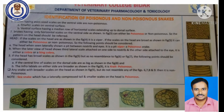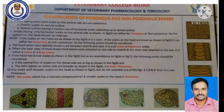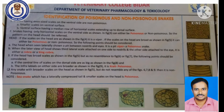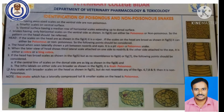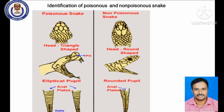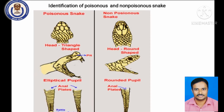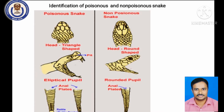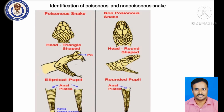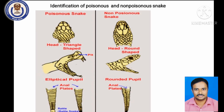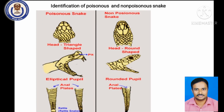Among all snakes, the krait is highly poisonous, but the amount of venom injected is very less in the krait compared to cobra bite. Non-poisonous snakes have a double row of sub-caudal plates in the anal area, whereas a single row is seen in poisonous snakes. Poisonous snakes have a triangular-shaped head or hood, and the pupil is usually elliptical in poisonous snakes.